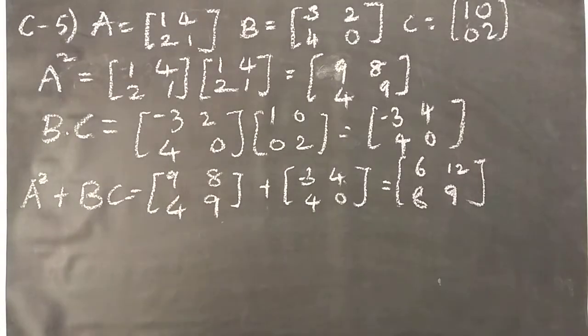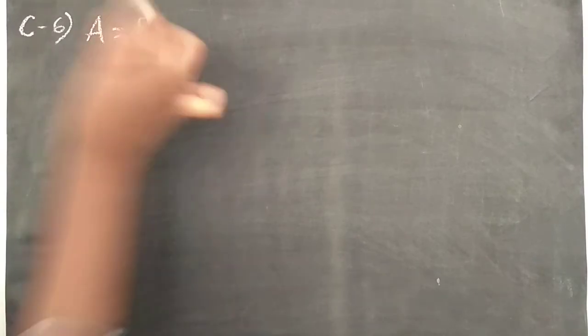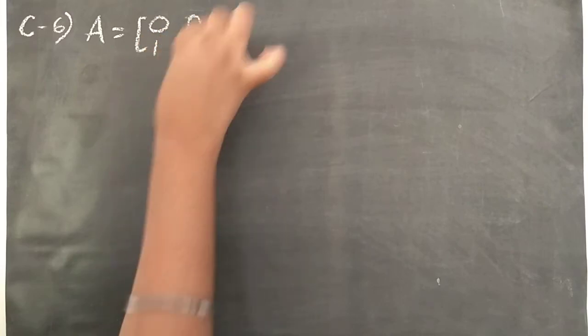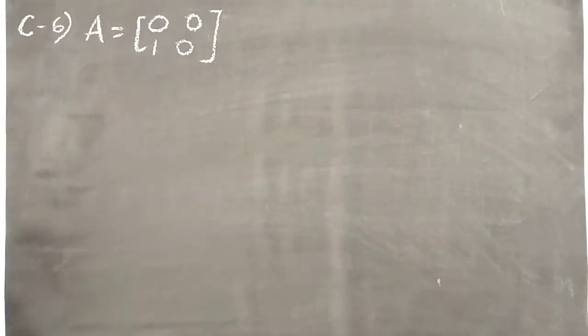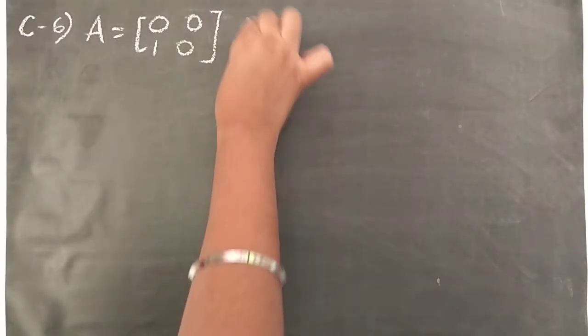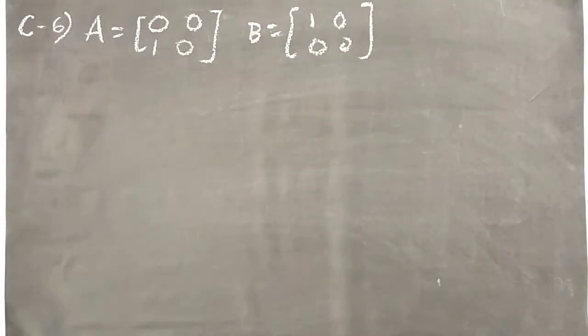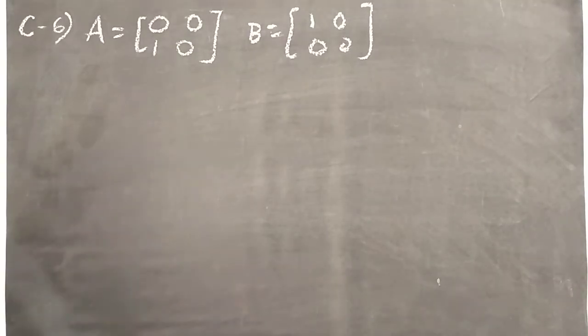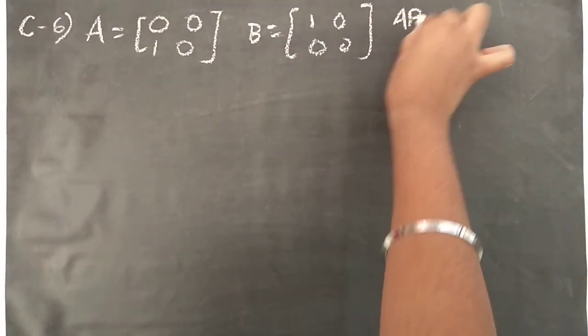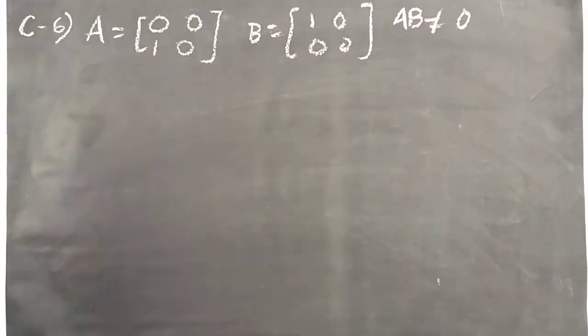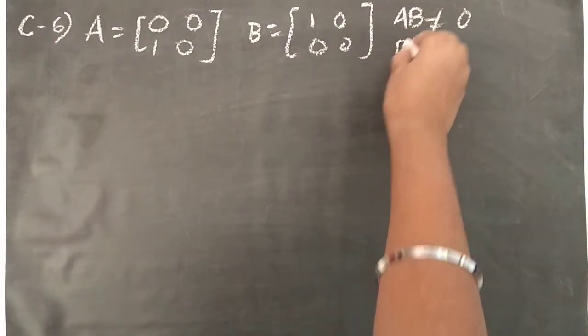So with this fifth one done, now we will see challenger question 6. Now 6th question is also quite simple. So A matrix is given to us, that is 0, 0, 1, 0. And they gave us B matrix also, that is 1, 0, 0, 0. And we have to prove that AB is not equal to 0, but BA is equal to 0.